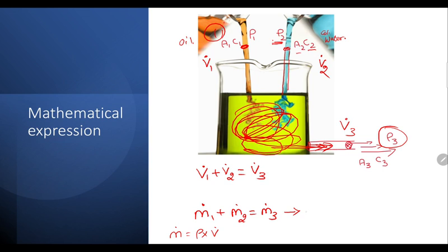So here, liquid one has a different density, so ρ₁ × V̇₁ + ρ₂ × V̇₂ = ρ₃ × V̇₃. This is the equation.